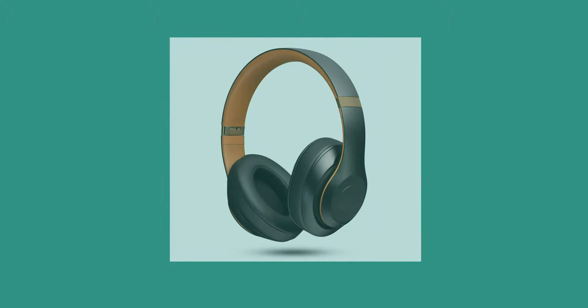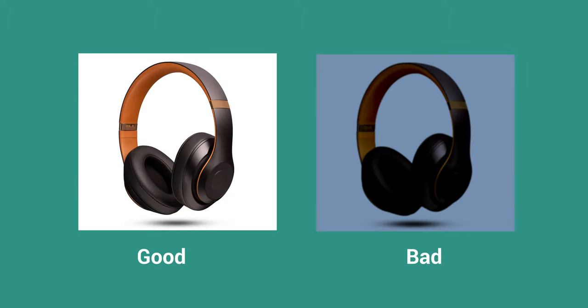We're going to need some information about your products so your customers know what it is and have all the information they need to make the decision to purchase. Let's start with the photo of the product. It needs to be clean, clear and professional. If you're taking the photographs yourself, make sure it's in a bright light environment with no harsh shadows. There's an article below with help with this.